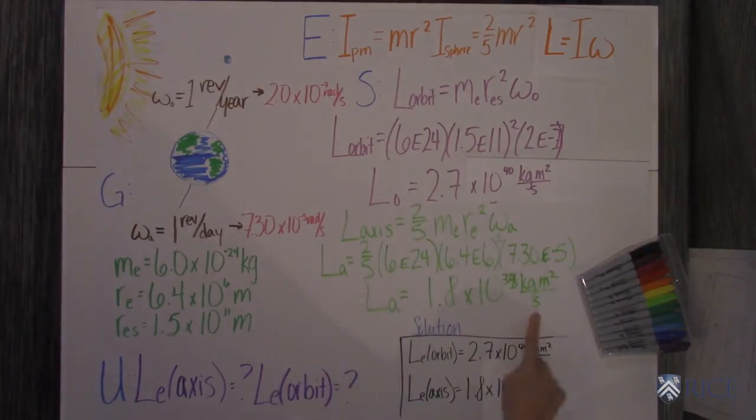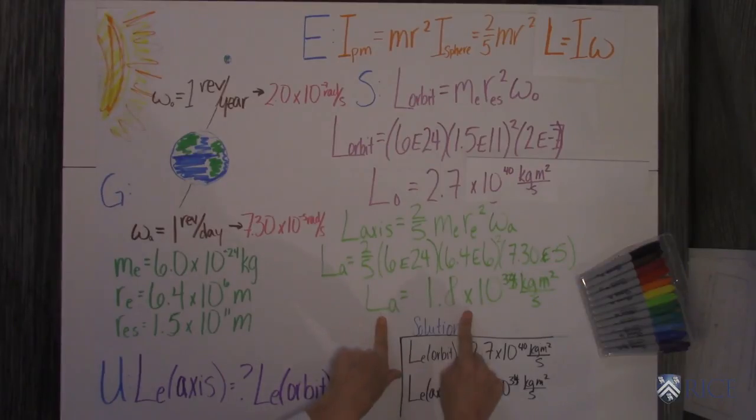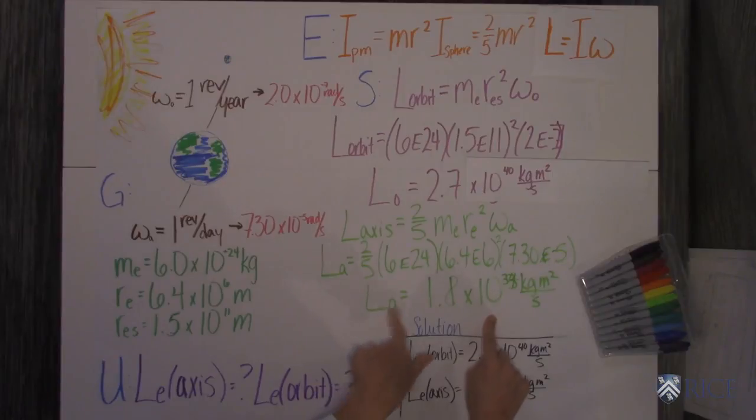Plug that in right here and you get that the angular momentum of the Earth spinning on its axis is 1.8 times 10 to the 34th. You can see that I just checked my work and I had made a little mistake in there. So always make sure to check your work.